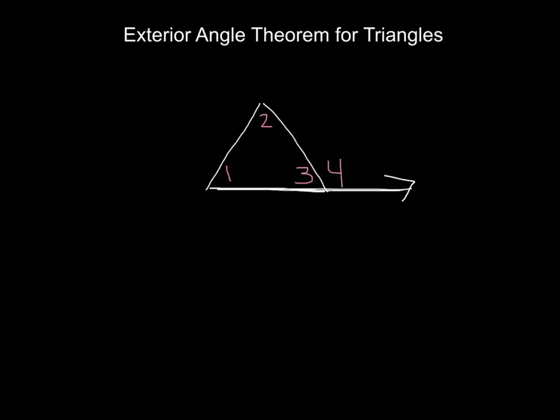Now the exterior angle theorem for triangles tells us that the measure of the exterior angle, so angle 4 in this diagram, is equal to the sum of the opposite interior angles. We sometimes call those remote interior angles. So in this case, the measure of angle 4 is equal to the sum of angle 1 and angle 2. We'd say the measure of angle 4 equals the measure of angle 1 plus the measure of angle 2.